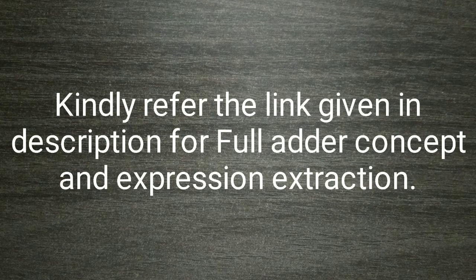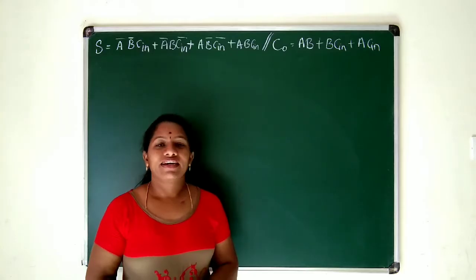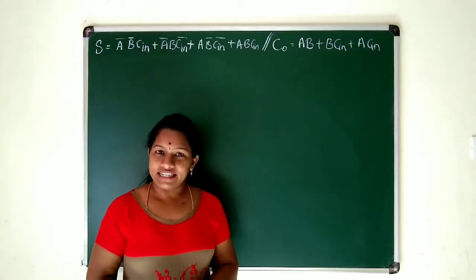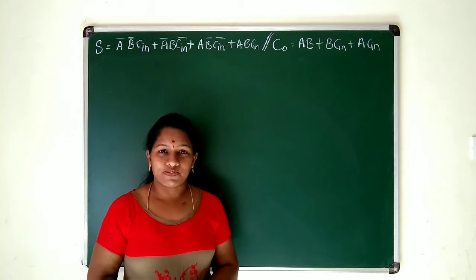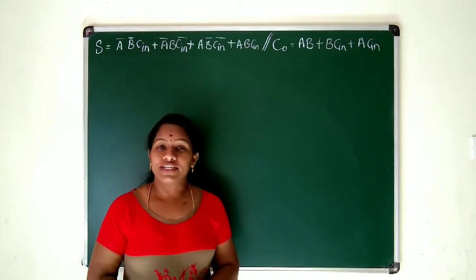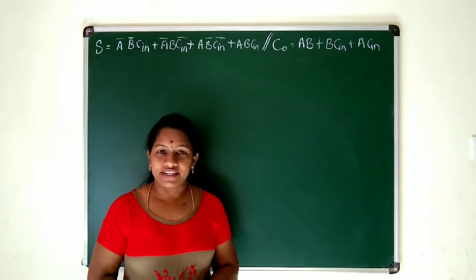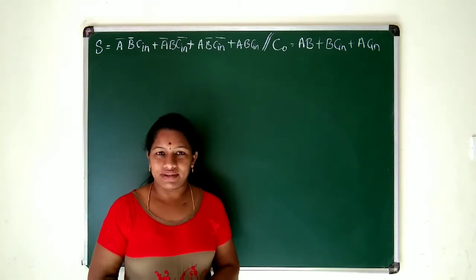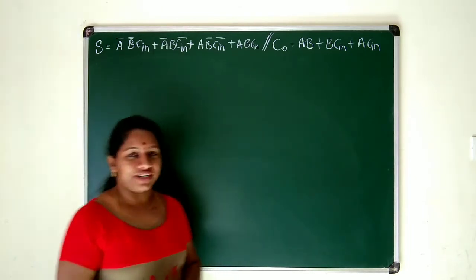Let's construct a logic circuit for a full adder using NAND gates. The hint is you need to check the expression where all parameters must be related with dot and complement.